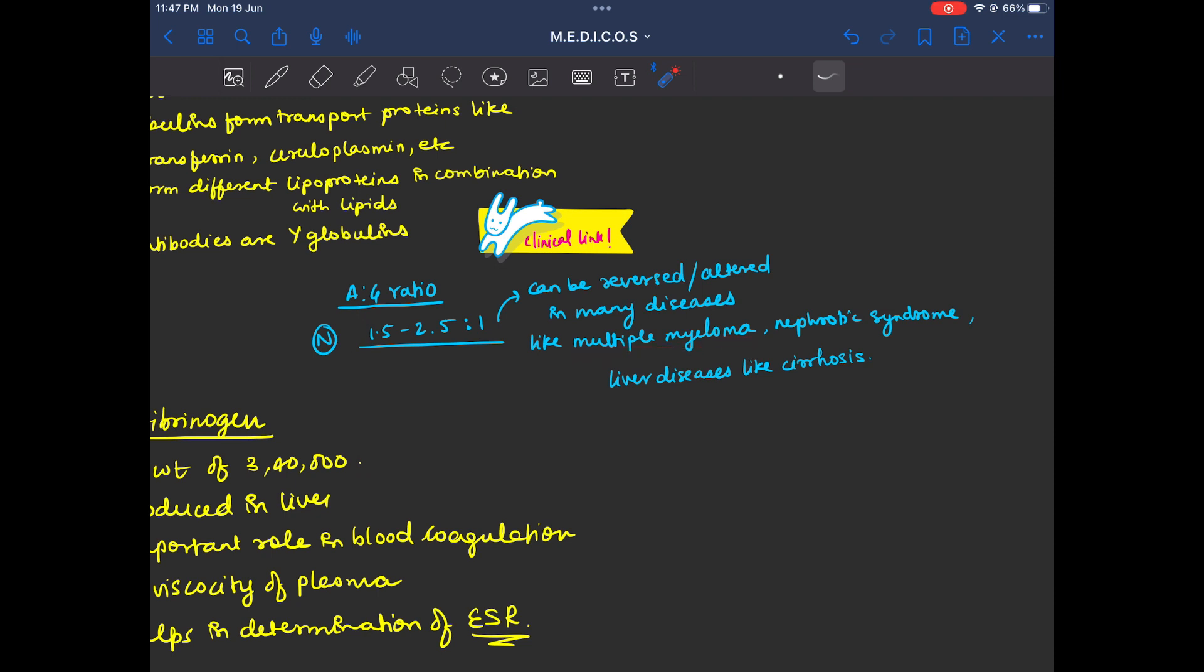And in multiple myeloma in which the globulins are increased, the ratio can be reversed. This is why the A/G ratio is important.